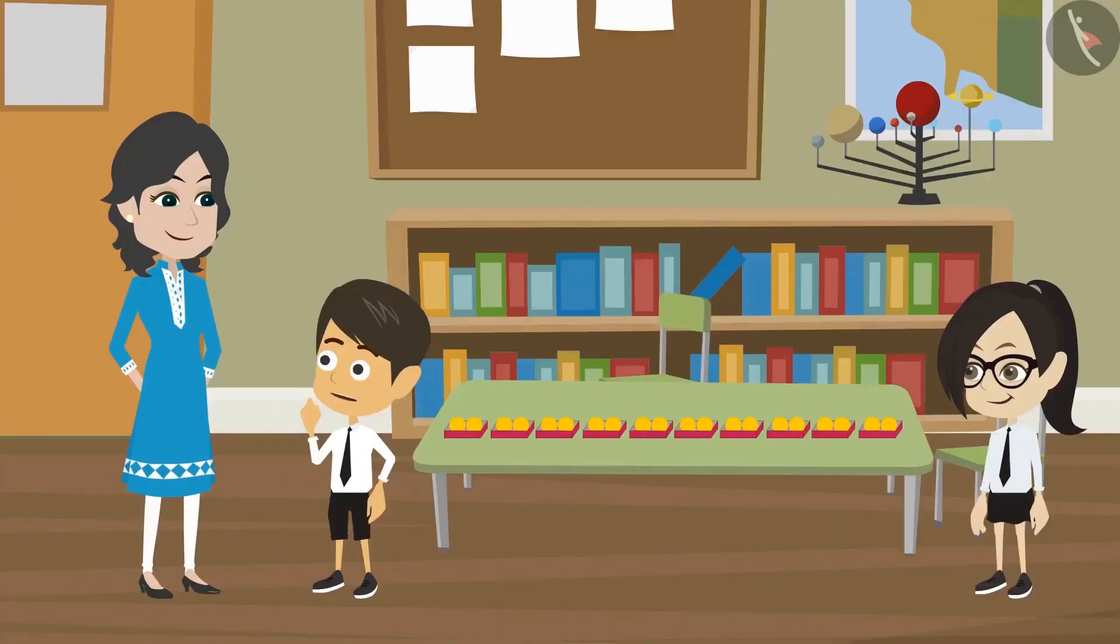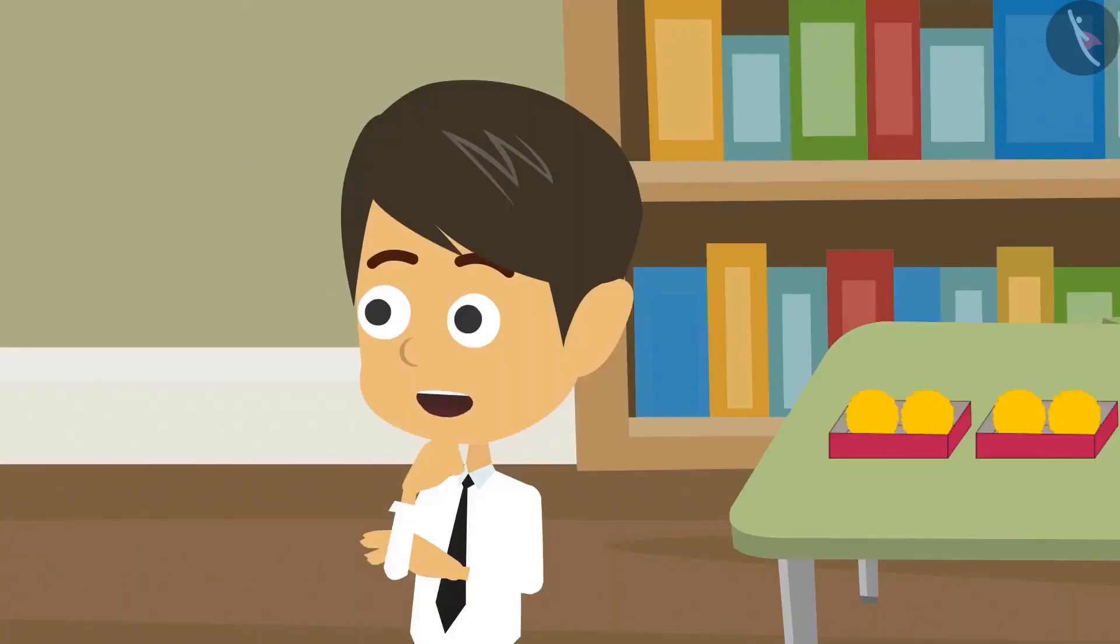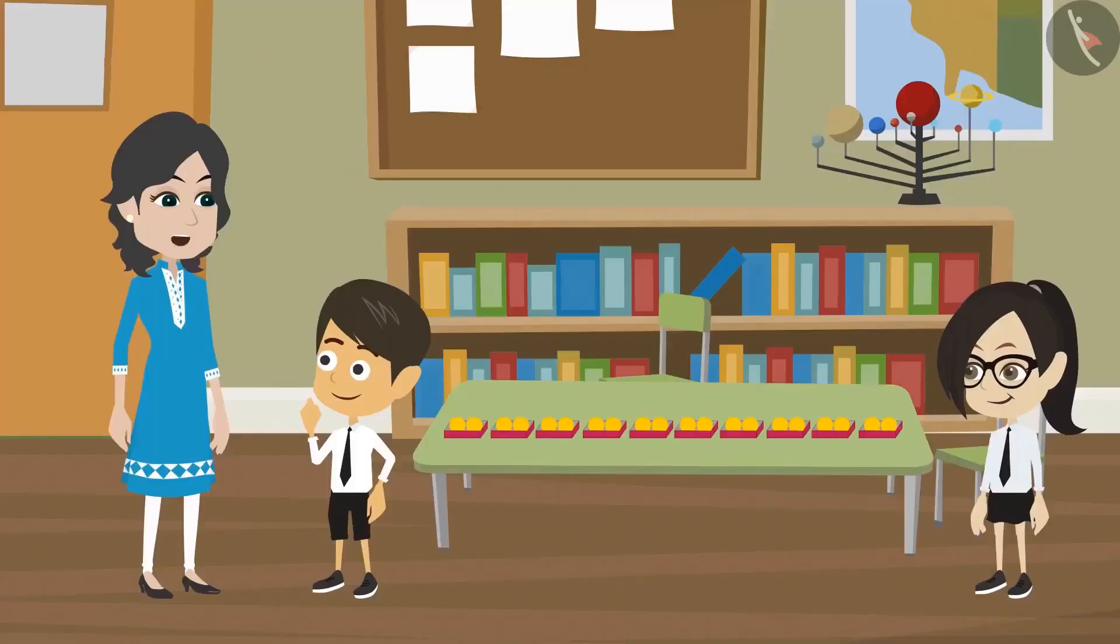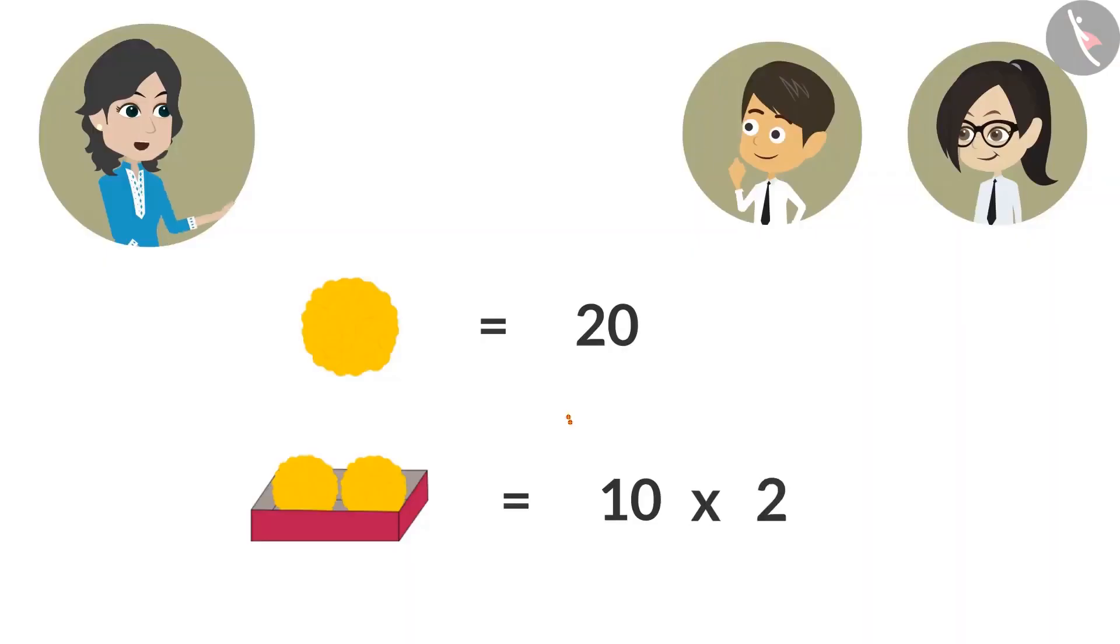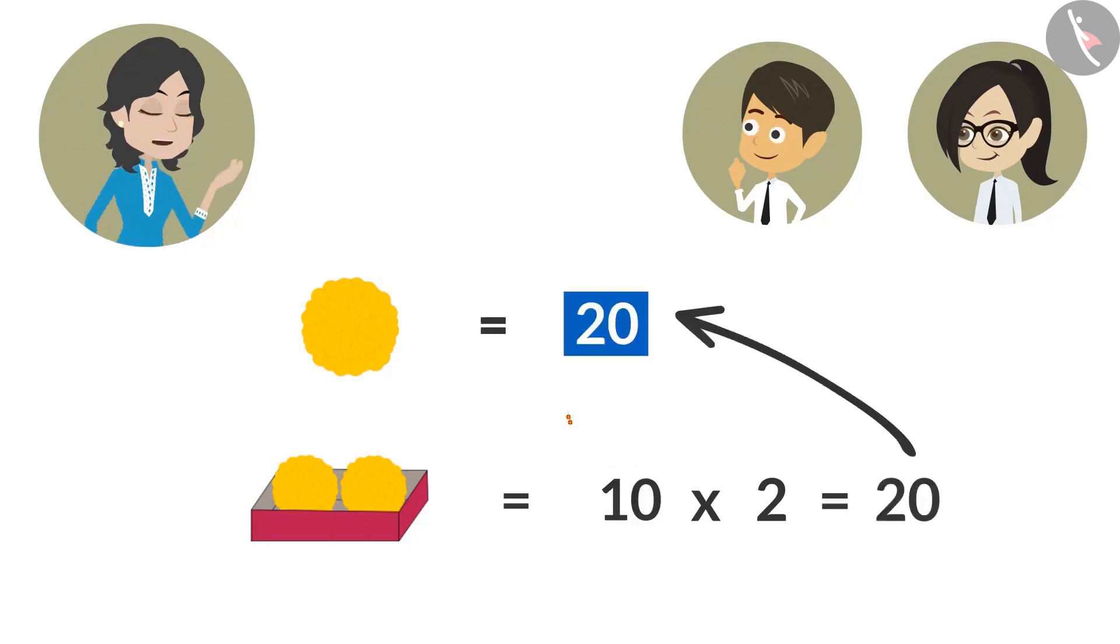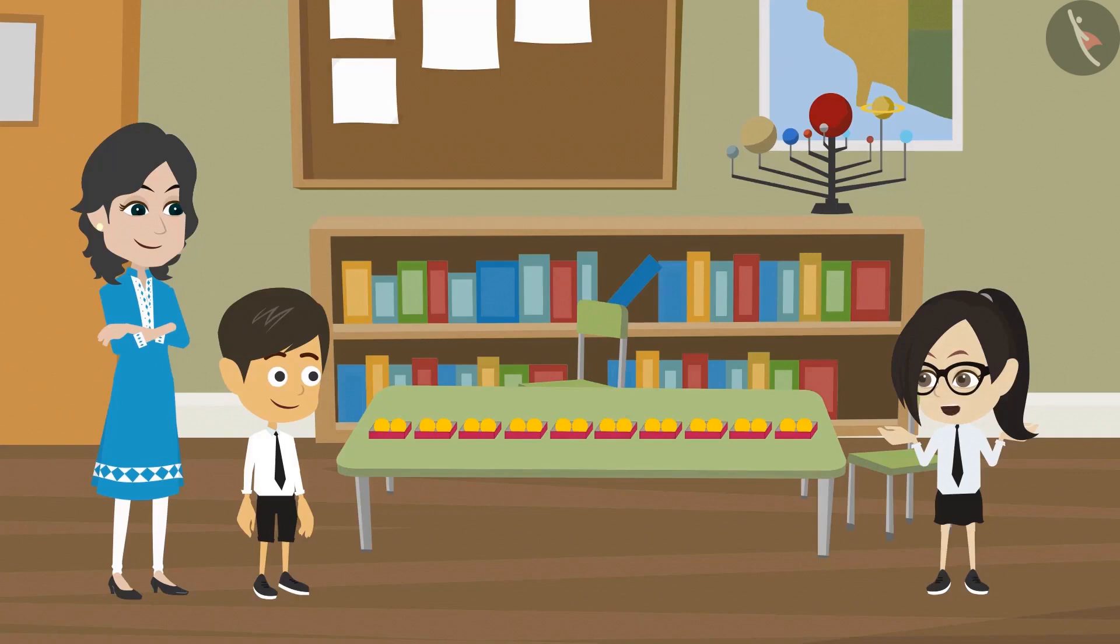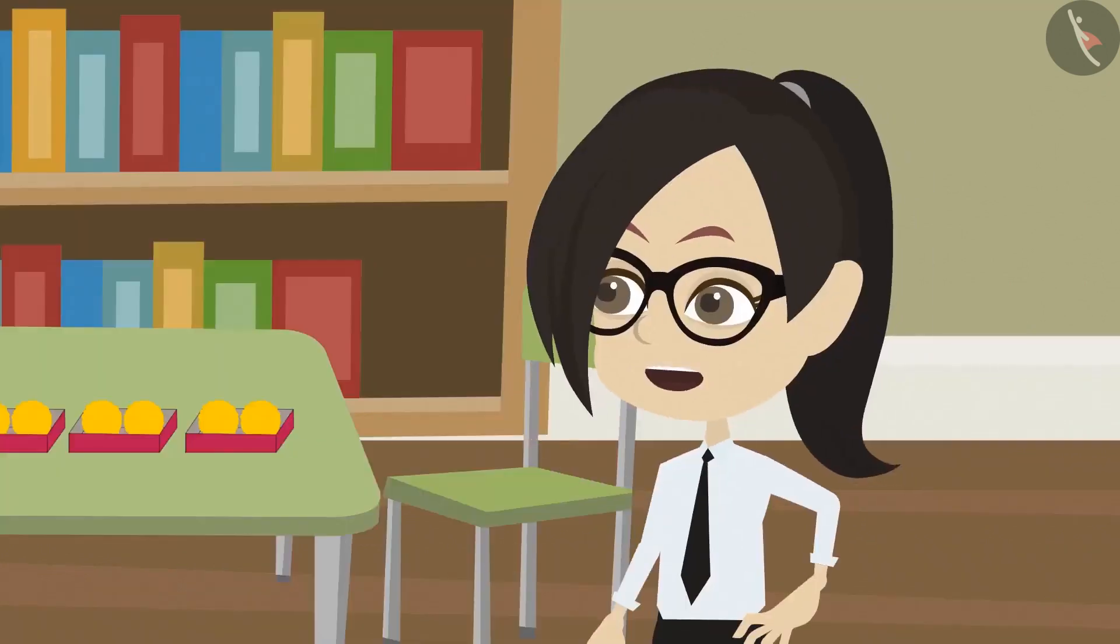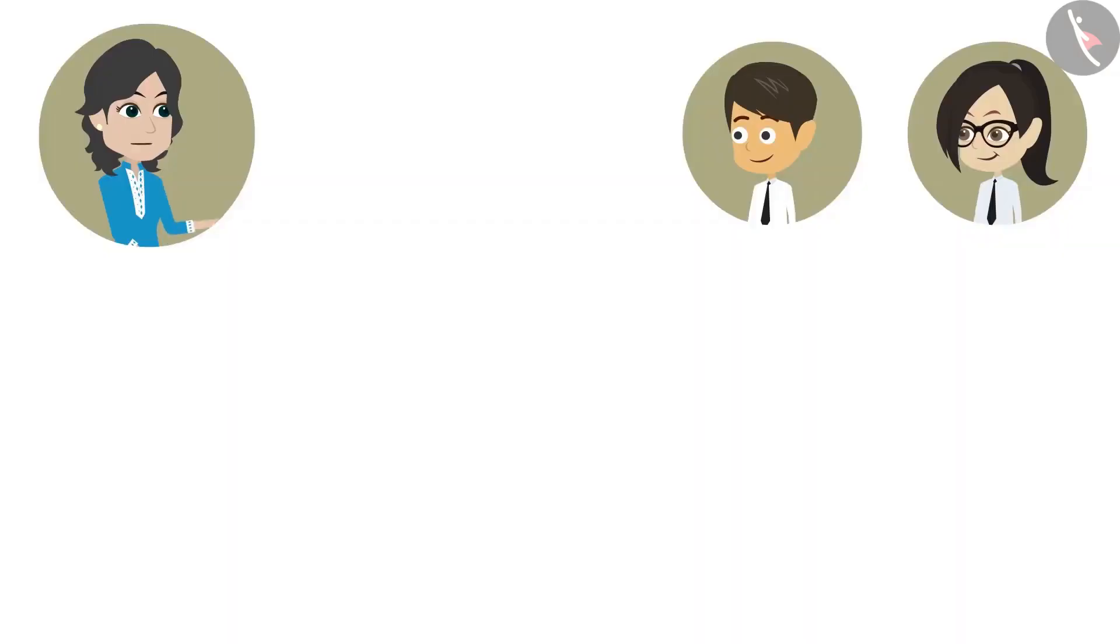That means you have a total of 20 ladoos. How could you find out so soon, madam? We have been counting for a very long time. It's easy. I have multiplied 2 with the number of boxes. So I got to know that there are 20 ladoos in 10 boxes. But why did you multiply?